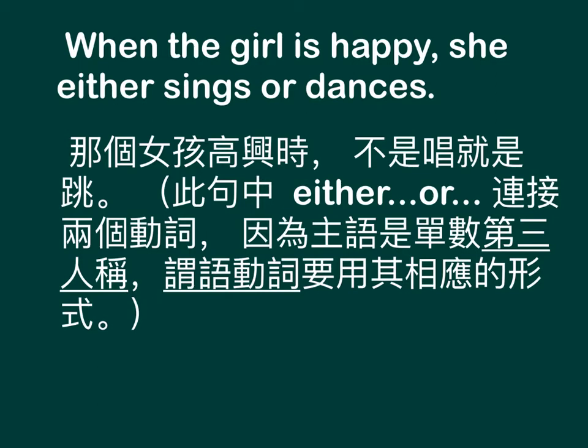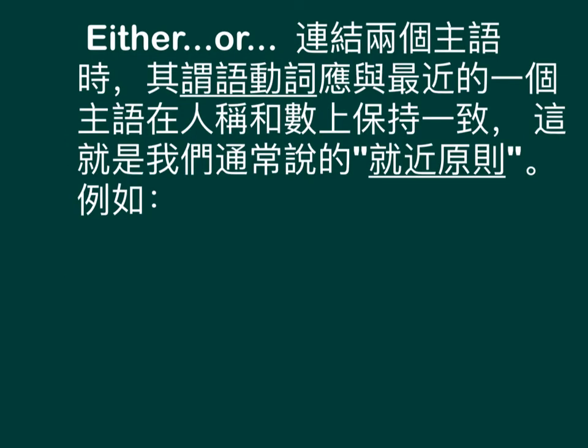Because the subject is a singular third person, the predicate verb must use its corresponding form. When either/or connects two subjects, the predicate verb should agree with the nearest subject in person and number. This is what we commonly call the proximity rule (就近原则).